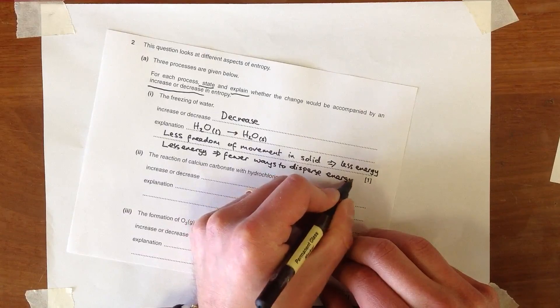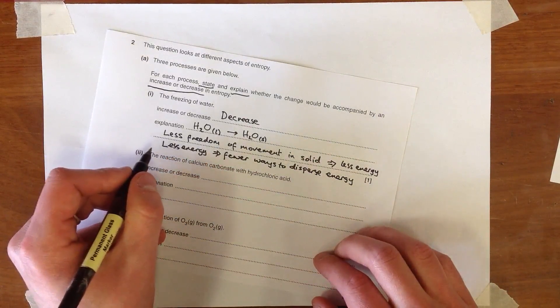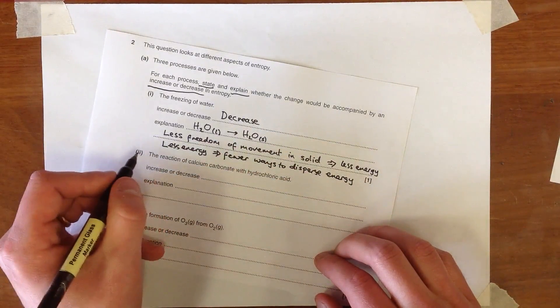And then less energy implies fewer ways to disperse the energy. Now you could have got the mark here just for talking about the system having more order in the solid state, but this is a better and more complete explanation.